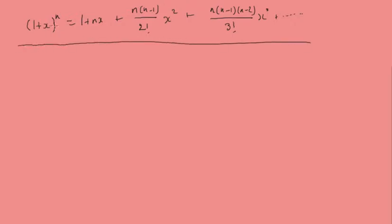Previously, we were learning the general binomial theorem: (1+x)^n equals 1 plus nx plus n(n-1) over 2 factorial x squared plus n(n-1)(n-2) over 3 factorial x cubed, and so on. We were doing problems involving the general binomial expansion theorem.